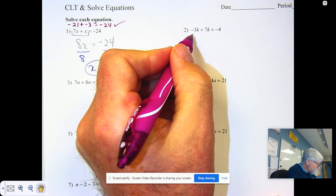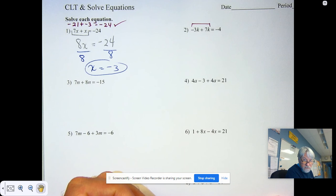Pause the video, combine like terms. Once you've done that, divide the negative 4 by the coefficient and find your value for k.